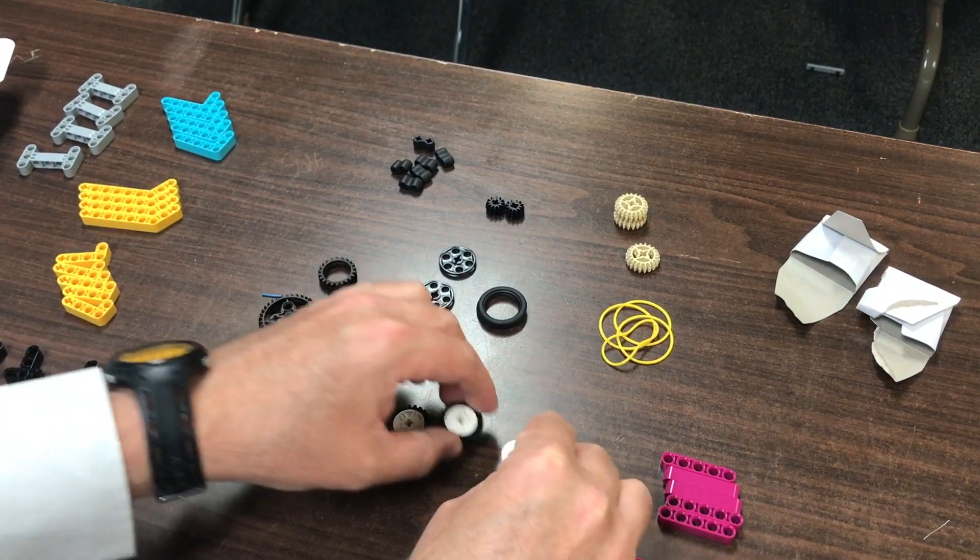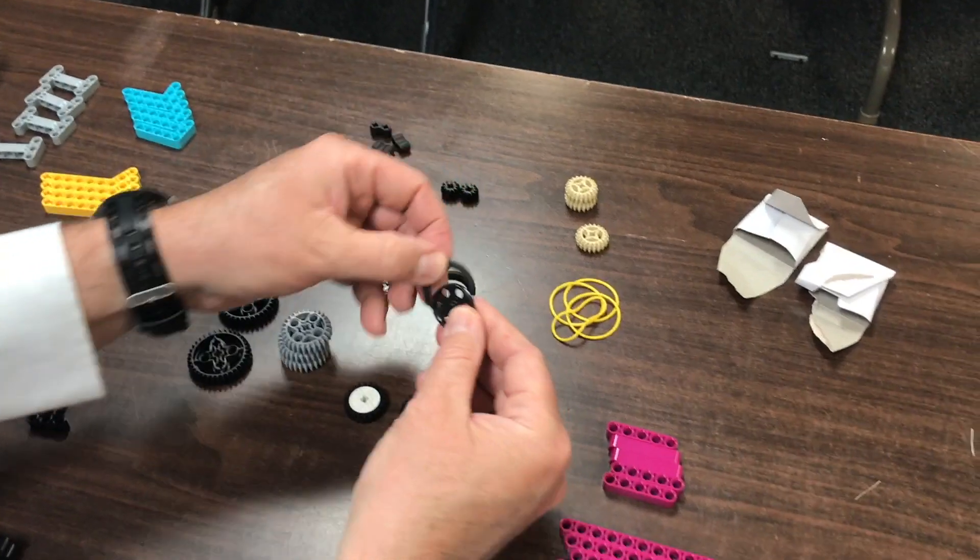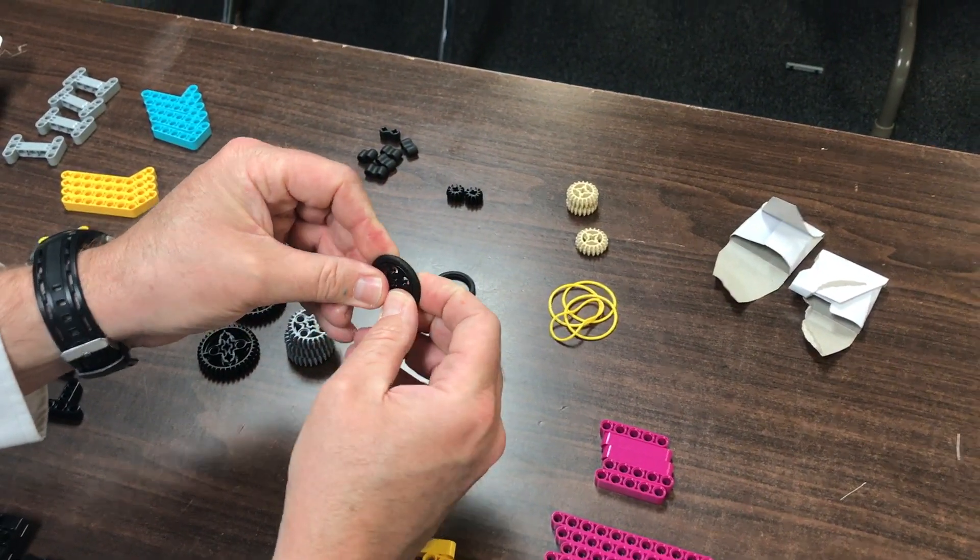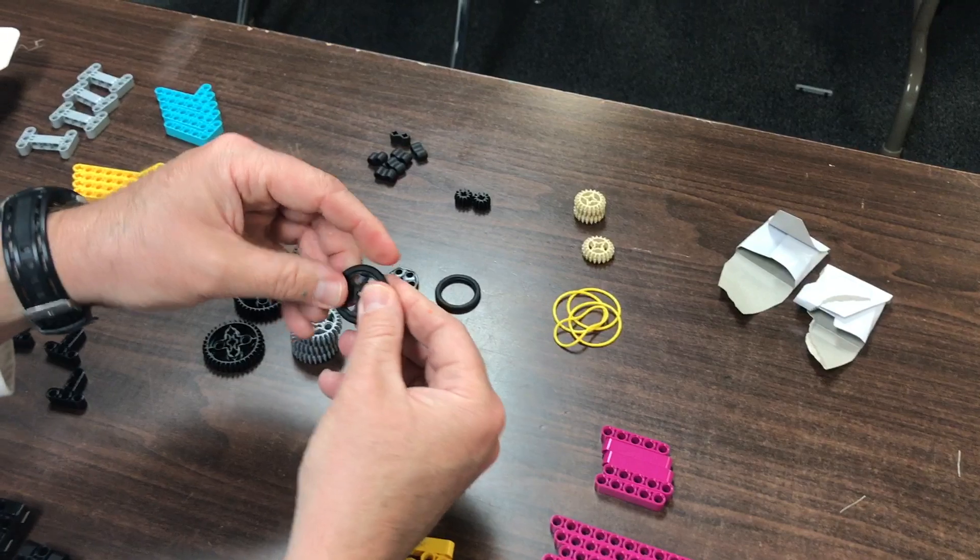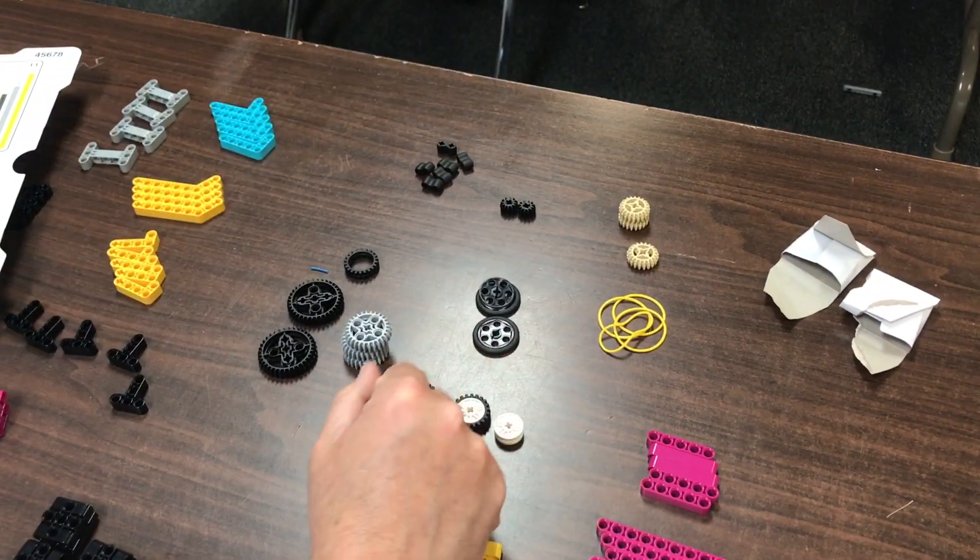That'll save you a little bit of space in your tray. You can also do that with these wheels as well, put the tire around it. You hardly ever use the wheel without the tire.